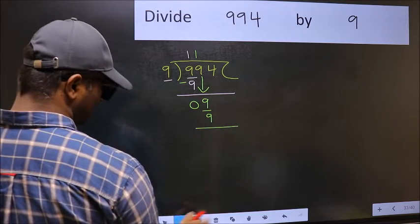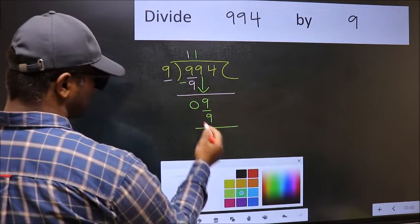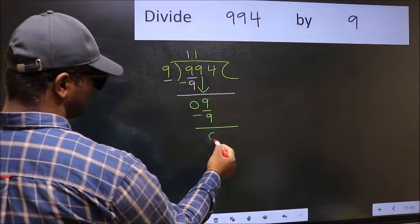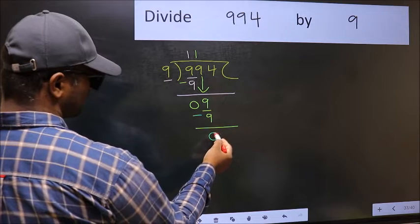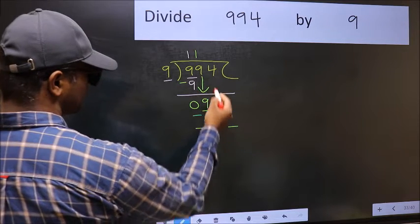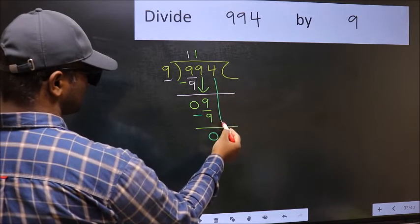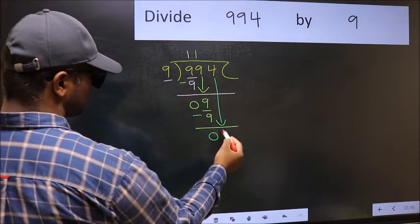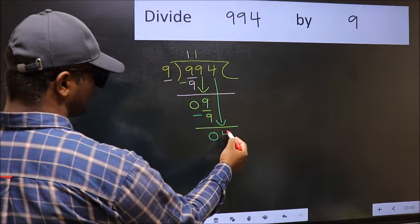Now you should subtract: 9 minus 9 is 0. After this, bring down the beside number, so 4 comes down.